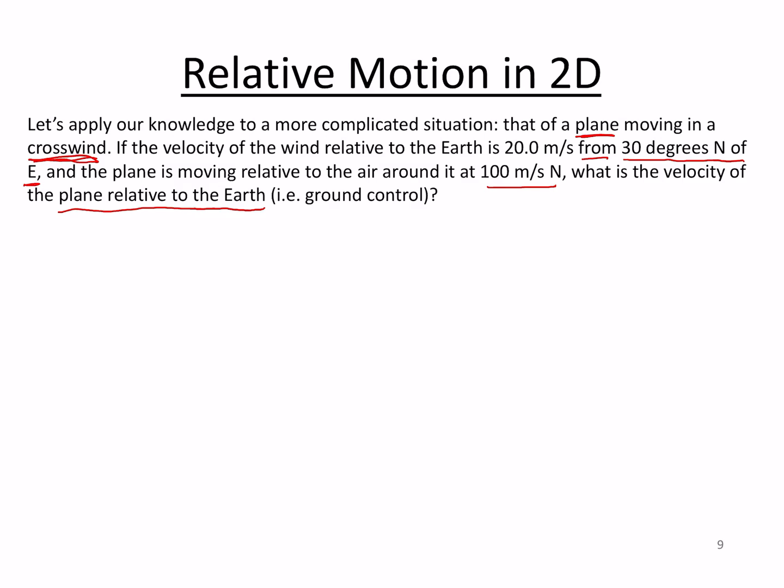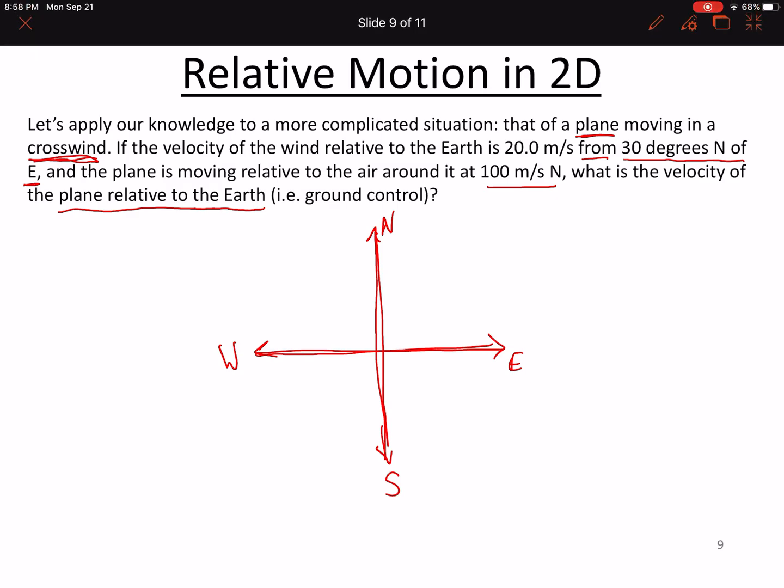And so if we're drawing that out, let's do a quick version here. Sorry for the flicker - I have my palm touching the screen. We've got our coordinate system: north, east, west, south. So 100 meters per second north, that's one of our velocity vectors. And we've got 20 meters per second from 30 degrees north of east. So north of east is here. And it's from that direction, so we'll put the arrowhead pointing towards the origin. I think that's the most intuitive way to do it. So this angle is 30 degrees. Those are the two velocities that we know.